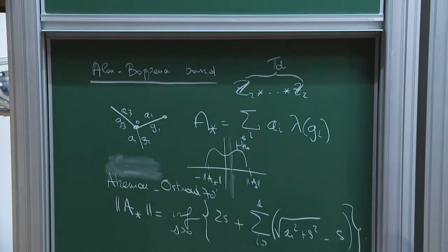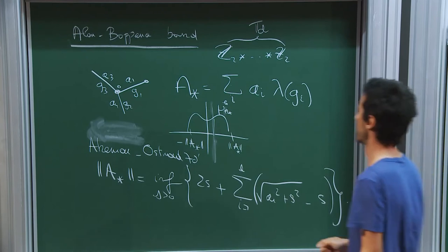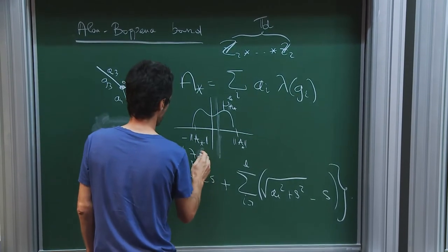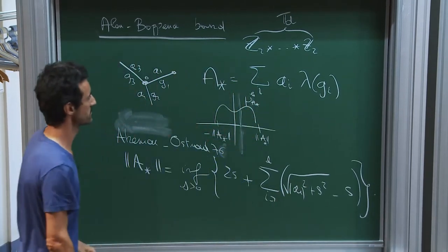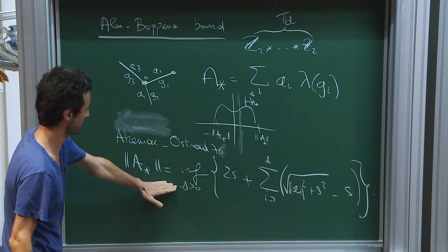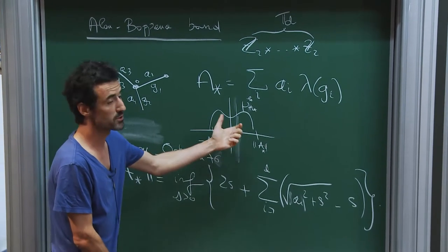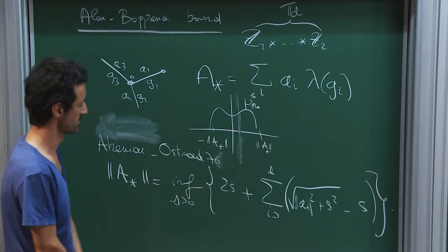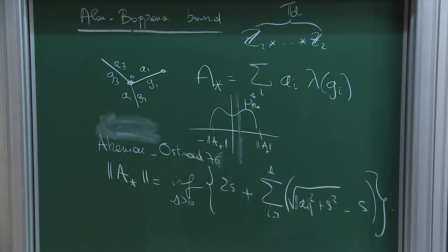The Alon-Boppana bound says you can lower-bound the second eigenvalue of the matrix A by the norm of A-star, up to a vanishing error term. A question: is positivity of weights assumed? For this formula, no — if A could be complex you'd have modulus squared. For the Alon-Boppana bound, some positivity of the entries will play a role.